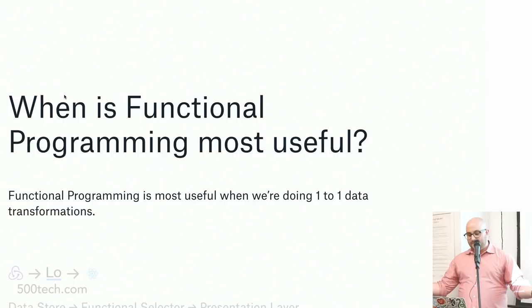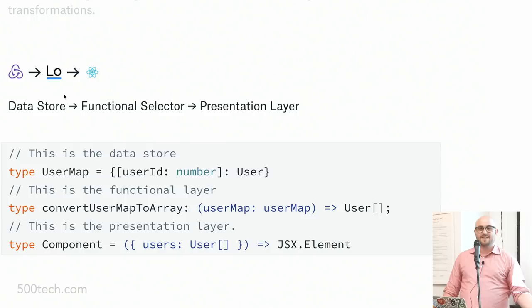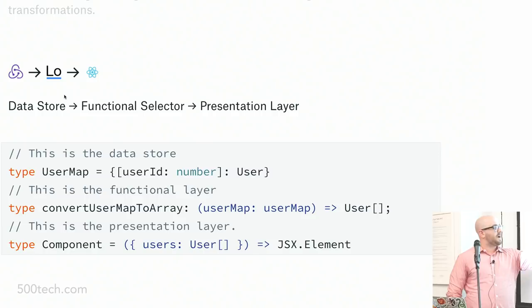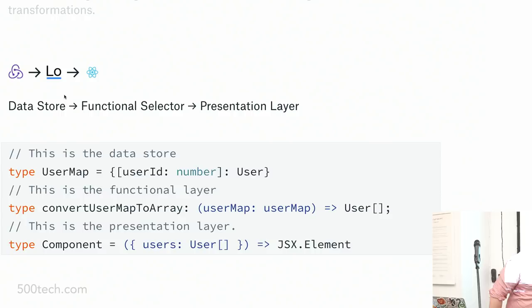Functional programming is exceptionally useful when we're doing one-to-one data transformations. If we have an app that uses React and Redux, we'll commonly put a functional selector layer in the middle. I'm going to use Lodash as an example because that's what we use at Dropbox, but you're welcome to use Ramda or Immutable or any other library. We'll store things by ID for near-constant lookup time, and then the functional selector layer converts the user map to an array of users.